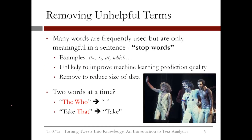Another preprocessing task we want to do is to remove unhelpful terms. Many words are frequently used but are only meaningful in a sentence. These are called stop words. Examples are 'the', 'is', 'at', and 'which'. It's unlikely that these words will improve the machine learning prediction quality, so we want to remove them to reduce the size of the data.